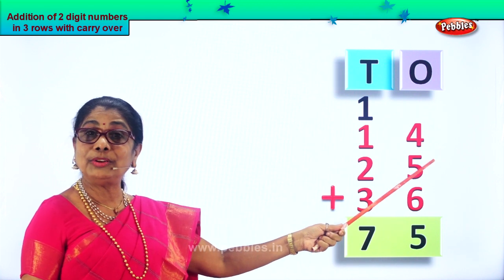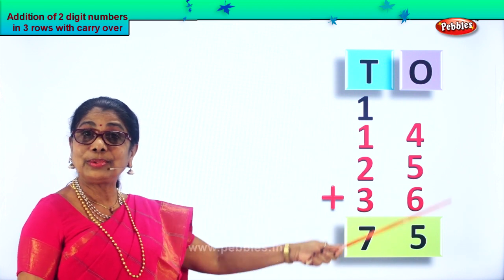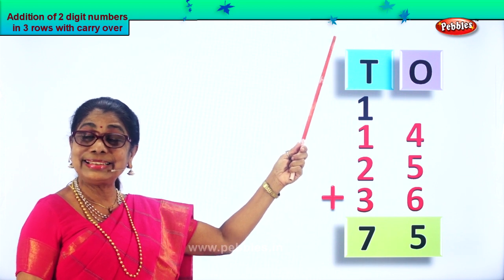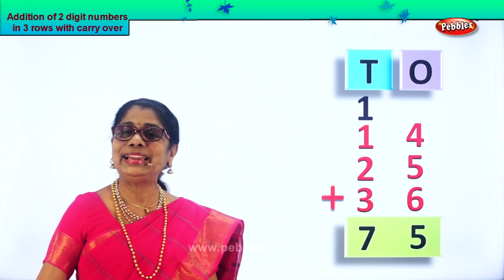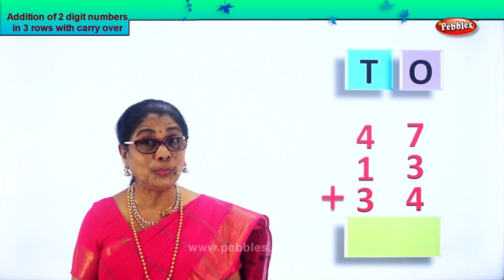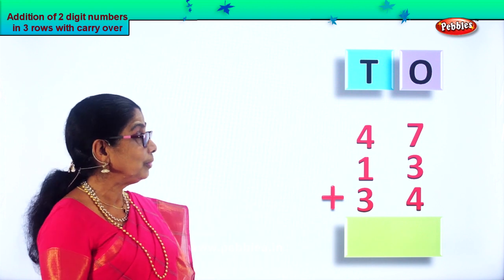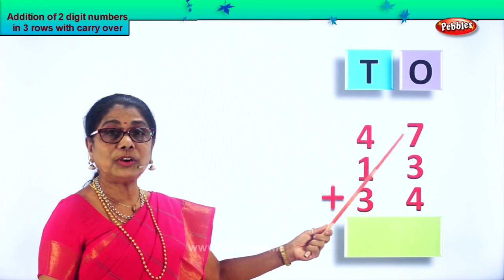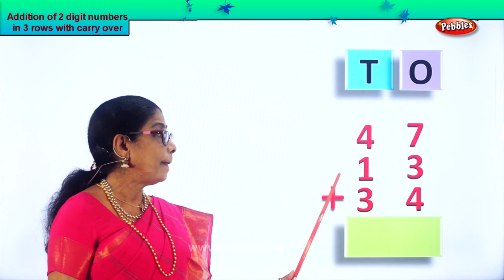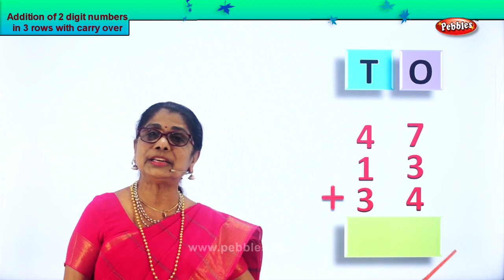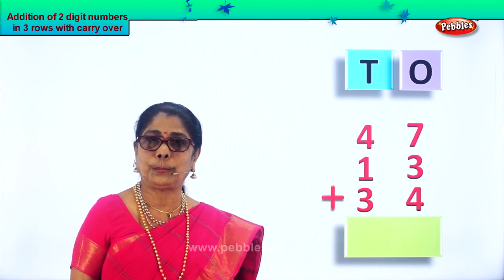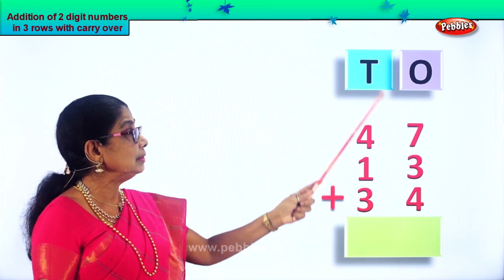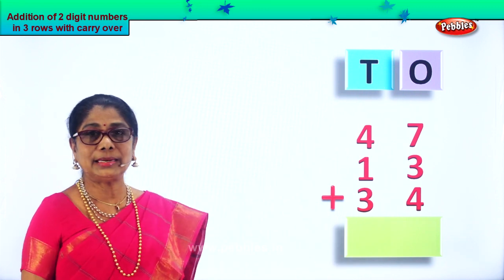We are doing three rows of numbers with carryover. Let's look at another sum. We are supposed to add forty-seven plus thirteen plus thirty-four.